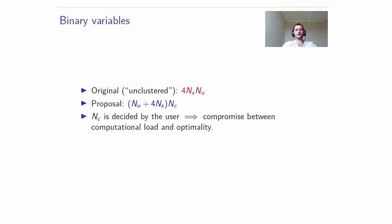Therefore, in our proposal, as compared to the original proposal, we reduce the number of binary variables from 4 times NS times NO to NO plus 4 NS times NC. And NC is a user-defined number of clusters. Therefore, we add control to the user, as he can select a lower NC for lower computational burden, or a higher NC for higher computational burden, and possibly a better cost.